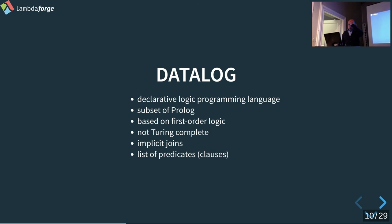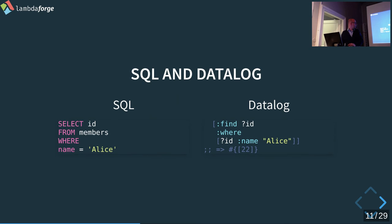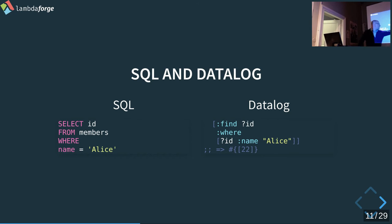Now let's talk about Datalog. Datalog is the query language for triple stores. It's a declarative logic programming language, a subset of Prolog, based on first-order logic. It's not Turing complete, so you can't have recursion. You have implicit joins. In the end, it's just a list of predicates or clauses you want to have. Here's a comparison with SQL: to find the ID of Alice, in SQL you'd write SELECT ID FROM members WHERE name = 'Alice'. The Datalog equivalent uses a find clause with the triple — entity, attribute, and value.